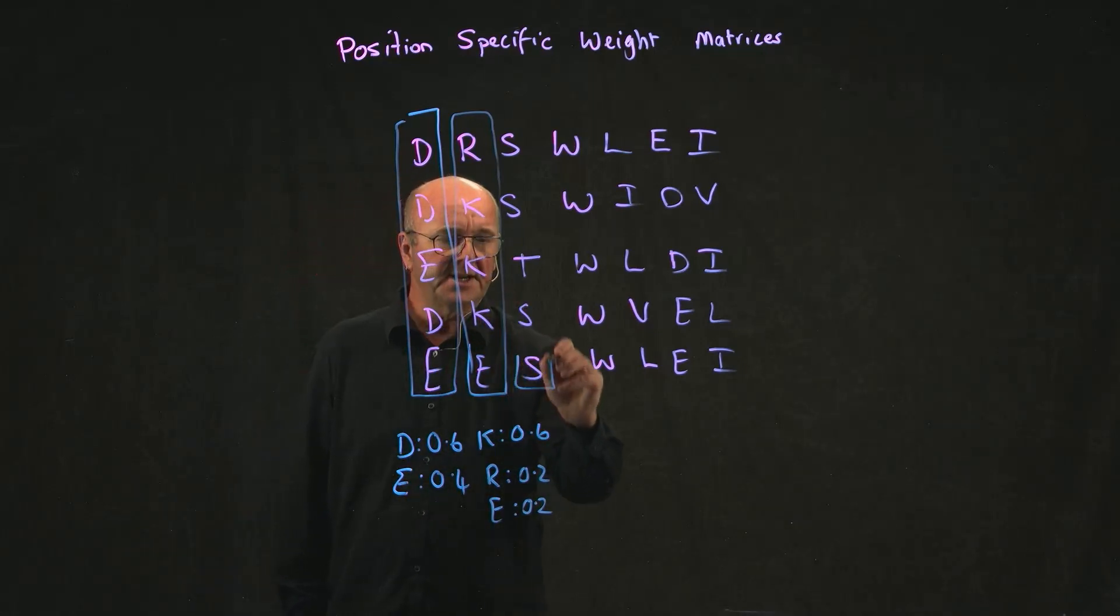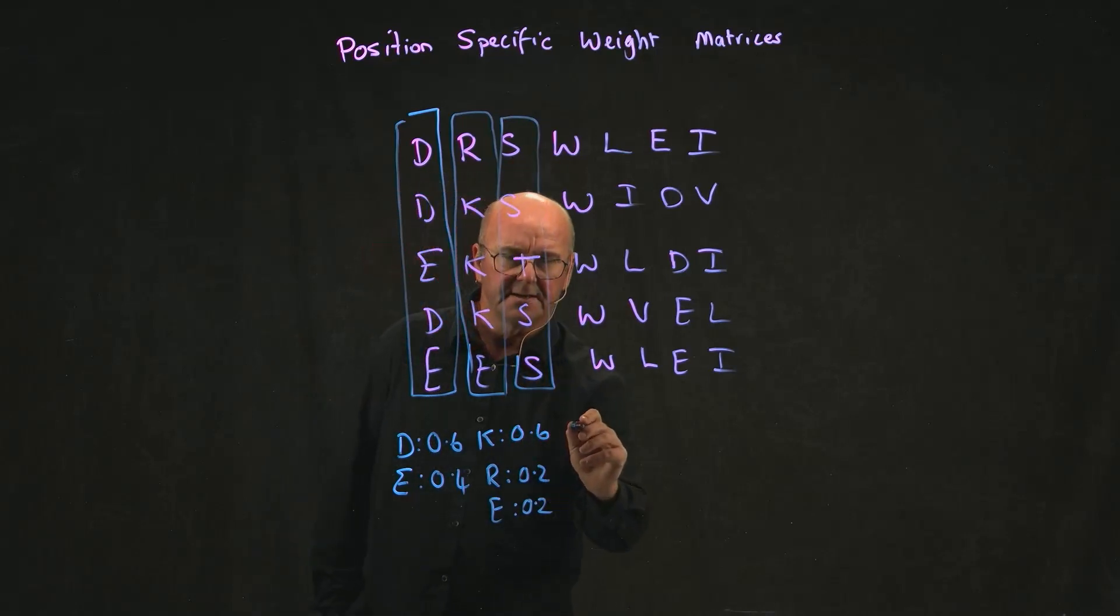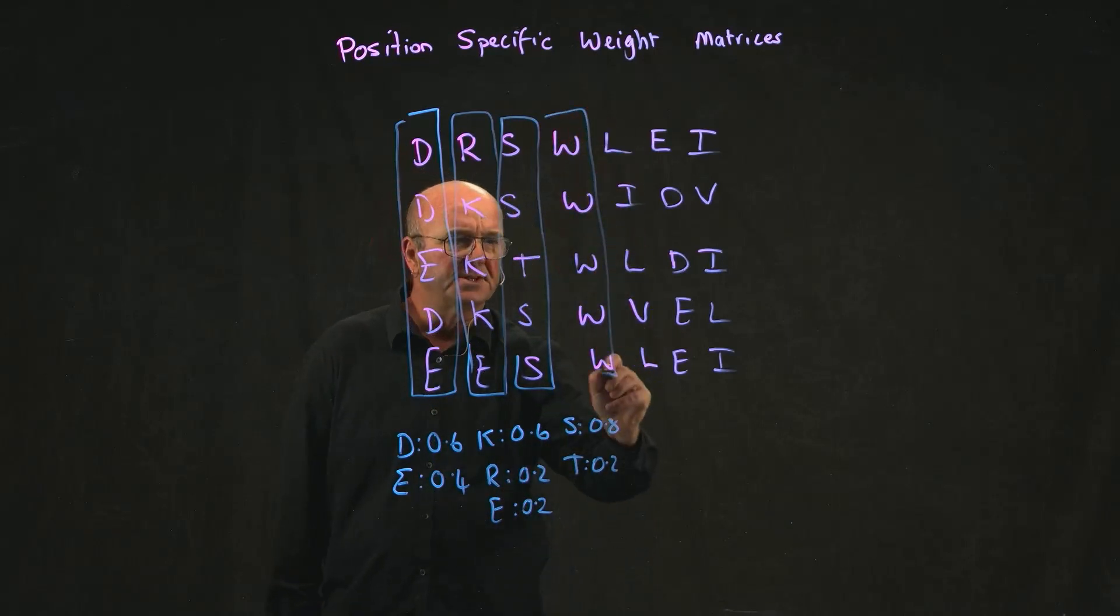At position three, we've got one, two, three, four S's and one T. So we're going to have S 80% and T for 20% of the time. At position four, we always have a W.